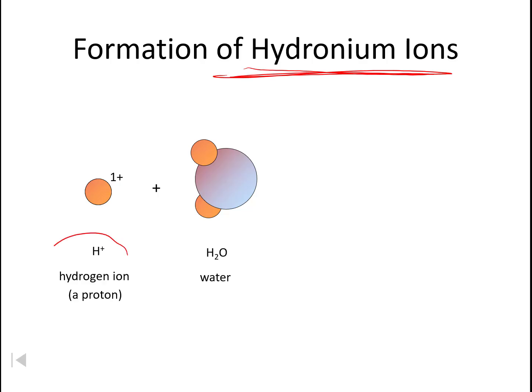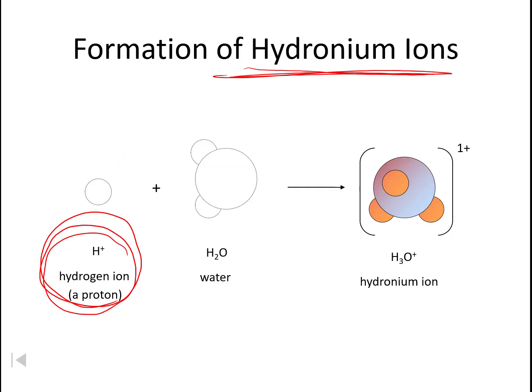Here's our hydrogen ion. It was already released by an acid. In order for this hydrogen ion to be in the water, it had to have come from an acid, and it is going to attach itself to the water, give the water a plus one charge. Now it is no longer water and hydrogen. They have combined to become hydronium.